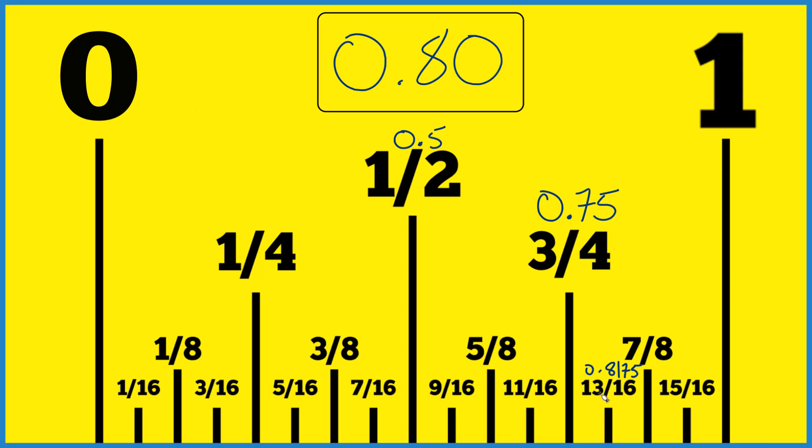So 13 sixteenths, if you divide 13 by 16, you get 0.8175. So that means it's pretty close, 0.80 or 0.8, pretty close to 0.8175. In fact, I would say it's probably right about here.